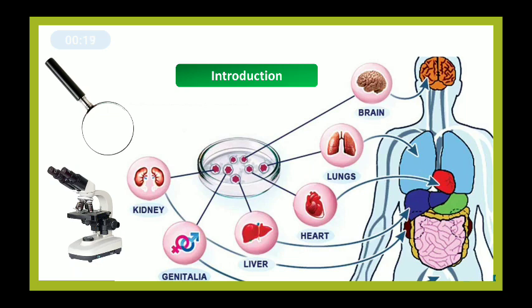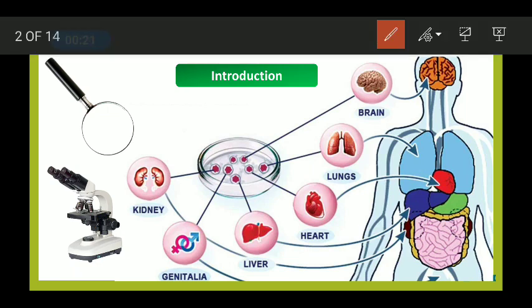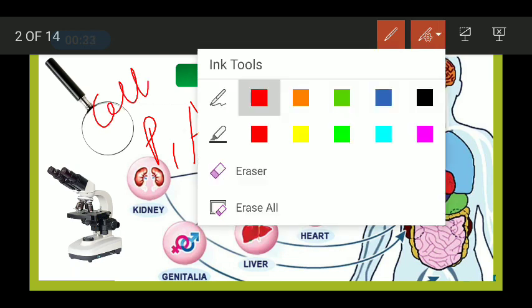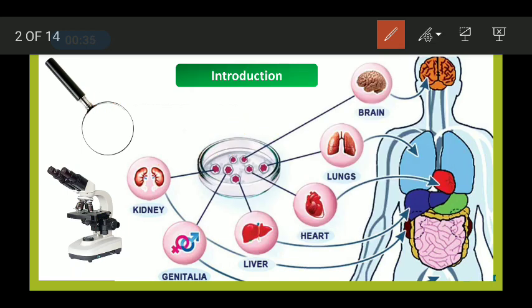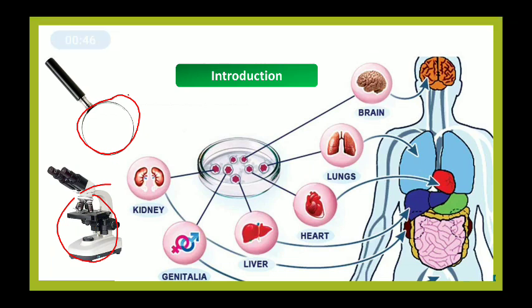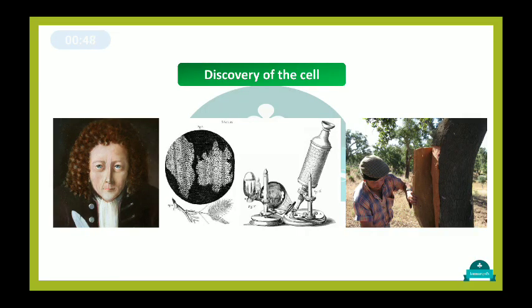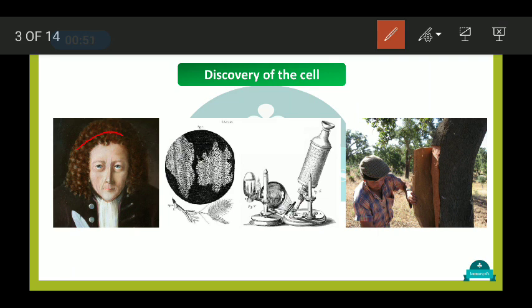We have learned that all plants, all animals, and all micro-organisms are made up of cells. These cells are very small and we cannot see them with our naked eyes. We can see them with the help of a hand lens or with the help of a microscope.